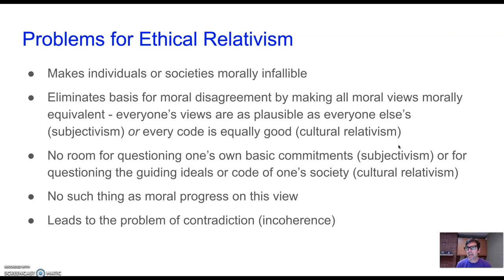Notice that these problems are ones that both Midgley and Enoch and Gensler all address in one way or another. So all of the readings for this week — Midgley, Enoch, and Gensler from last week — are all examples of philosophers who are arguing against ethical relativism. Hume is the one philosopher we read last week who defends a kind of relativism. But here are some of the problems that Midgley and Enoch and Gensler in different ways address.